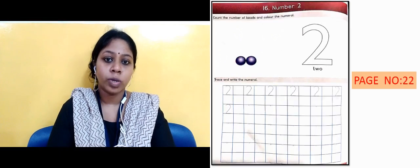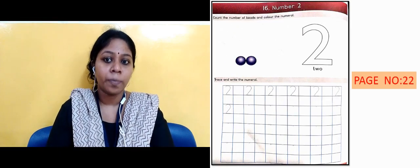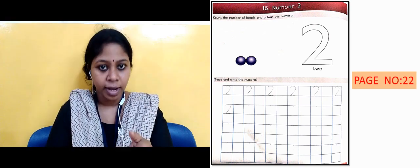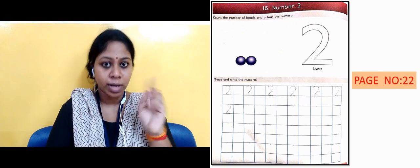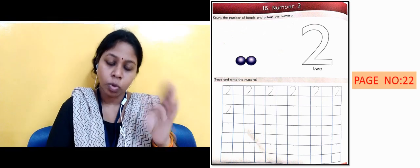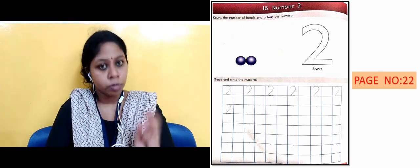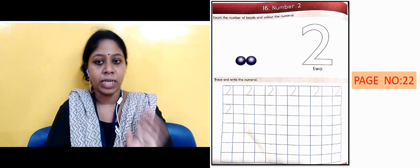The next slide is showing page number 22 and the topic name is number 2. Just like you did for one, similarly for two you will count two beans. After that you colored two, right? After that you traced two, meaning you traced it. Then you wrote the number 2. So you should also practice this writing and tracing.